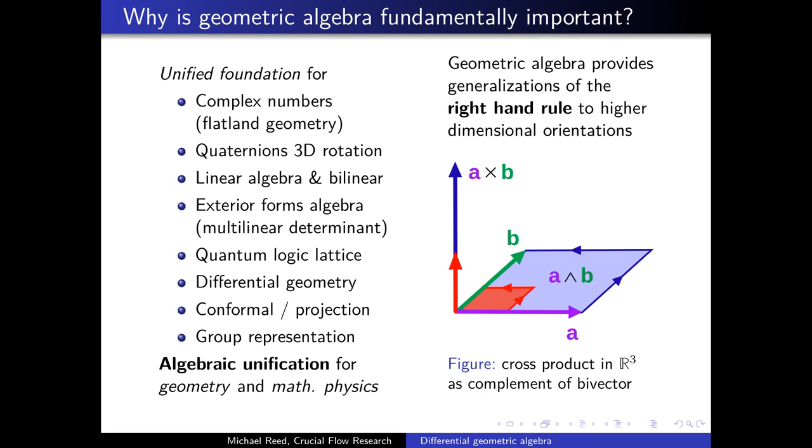Why is geometric algebra fundamentally important? It provides a unified foundation for complex numbers, which is flatland geometry, quaternions for 3D rotation, linear algebra and bilinear, exterior forms algebra which is a multilinear determinant generalization, quantum logic lattice, differential geometry, conformal projection, and group representation. We provide an algebraic unification for geometry and mathematical physics.